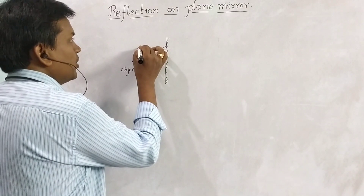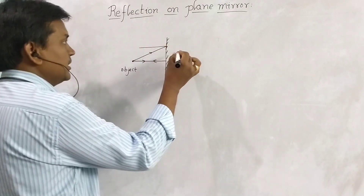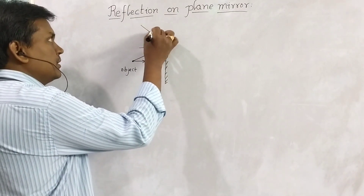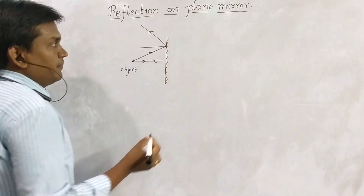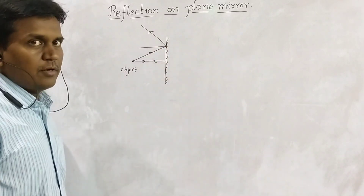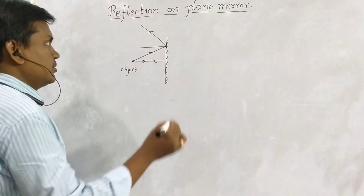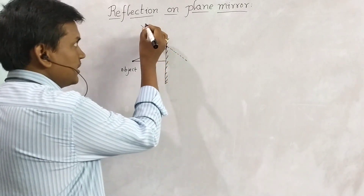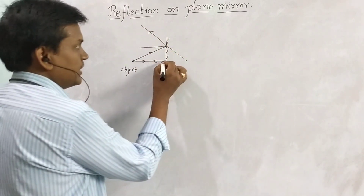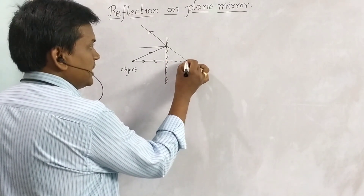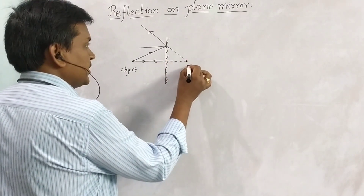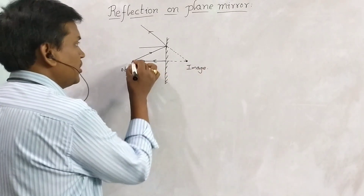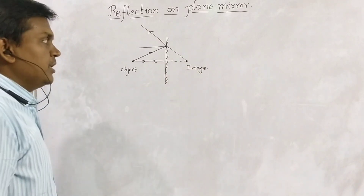And this second ray, according to the laws of reflection, will make an equal reflected ray. That means the angle of incidence equals the angle of reflection. So if we extend these reflected rays, they both intersect at a point. So this is the image. As the object is a point, the image is also a point image.